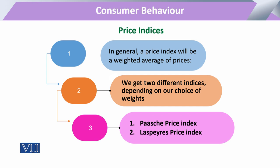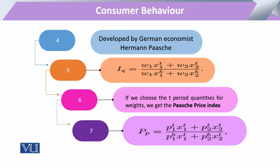Here two price indexes come before us: one is called the Paasche price index and the other is the Laspeyres price index. Regarding the Paasche price index, it was developed and explained by German economist Hermann Paasche, which is why it bears his name. As we have established in index numbers, there will be various commodities.